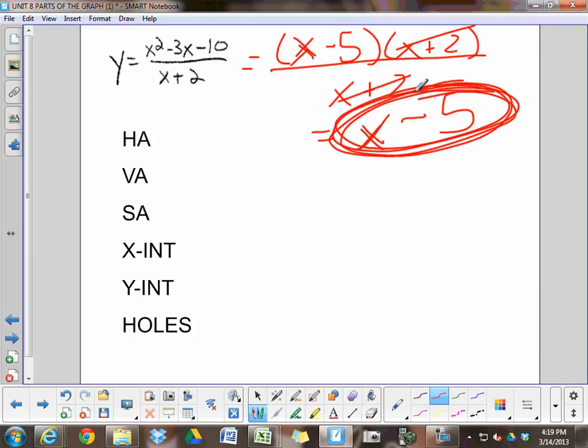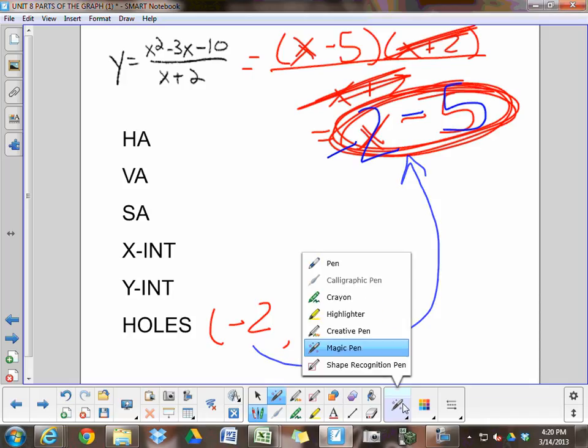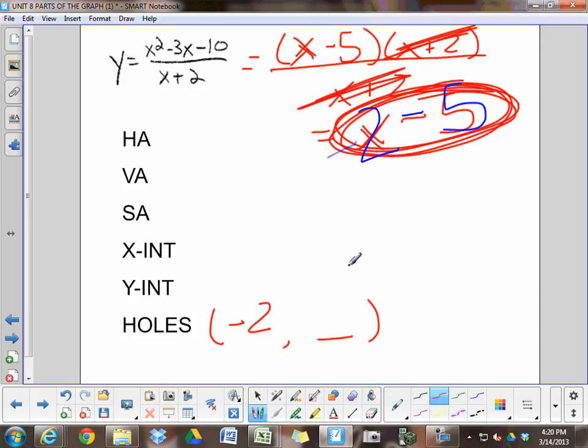We do know that there will be a hole in the graph because there was a cancellation at negative 2 comma something. That something comes from plugging negative 2 into the remaining function and seeing what you get. Negative 2 minus 5 is negative 7. That's where the y coordinate is. Negative 2, negative 7.